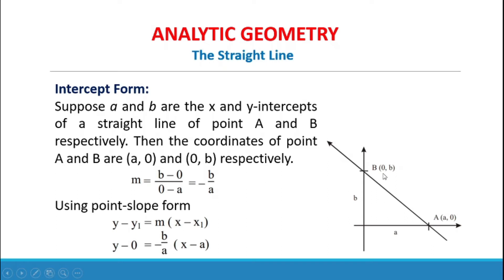Using the slope formula: (B minus 0) over (0 minus A) equals negative B over A. Then using point-slope form, Y minus Y₁ equals M times (X minus X₁), substituting X₁ = A and Y₁ = 0, we get Y minus 0 equals negative B over A times (X minus A).